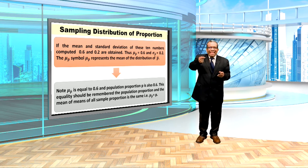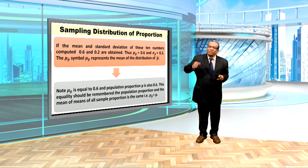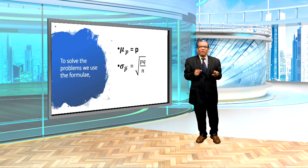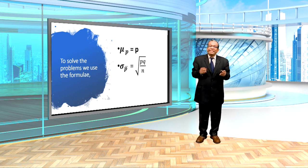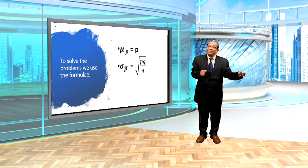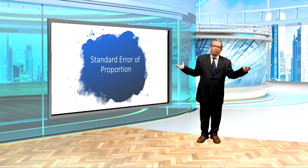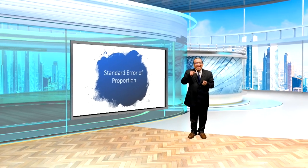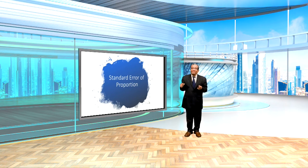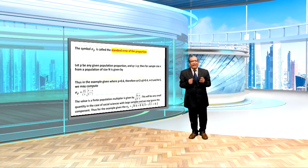To solve problems involving proportions, we use the following formula. The population proportion is p, and the sample standard deviation of proportion is equal to the square root of p times q divided by n. The standard error of proportion — sigma p-bar — is the standard deviation of the sampling distribution of sample proportions. It is called the standard error of proportion.